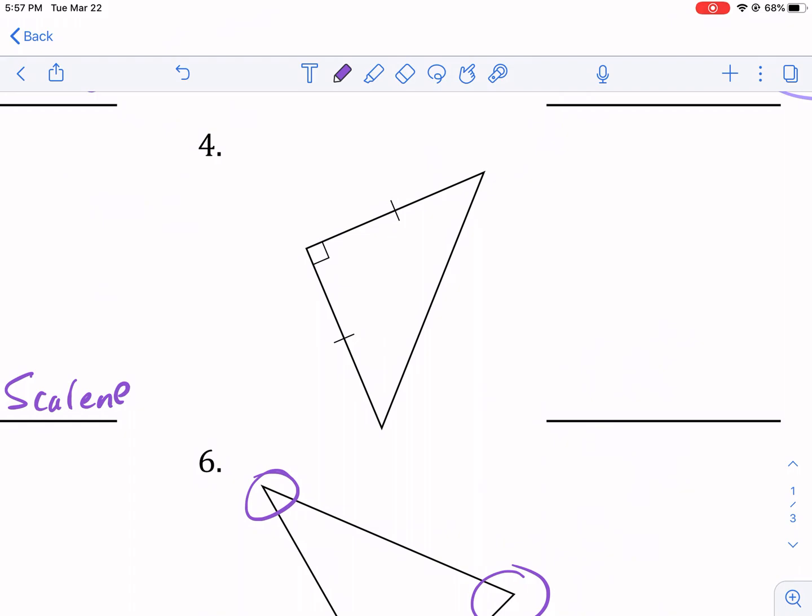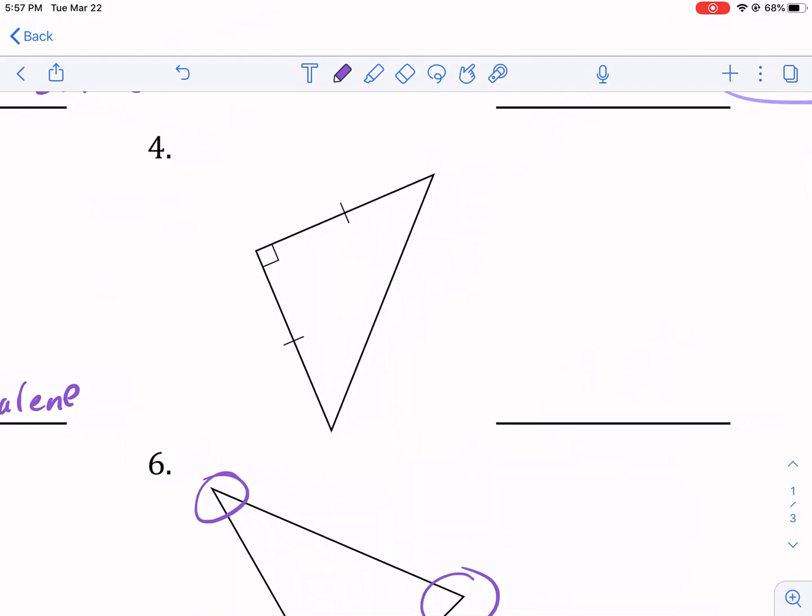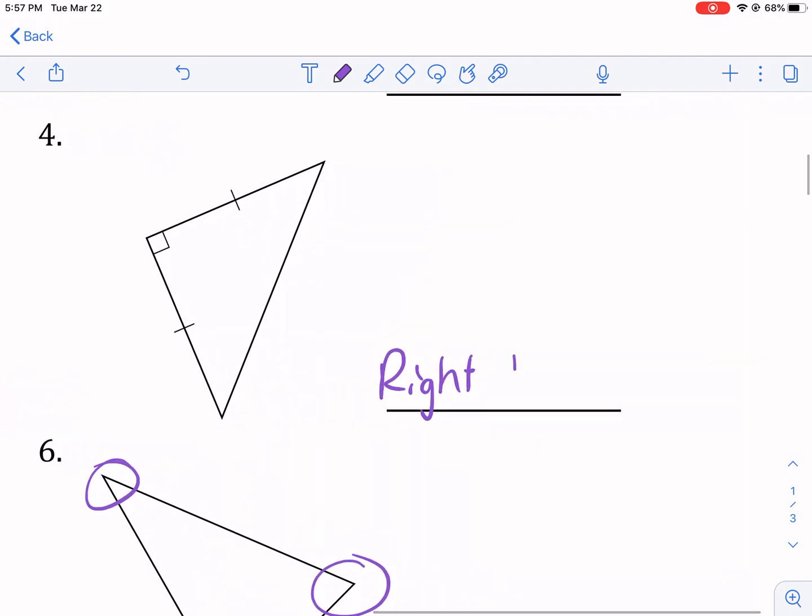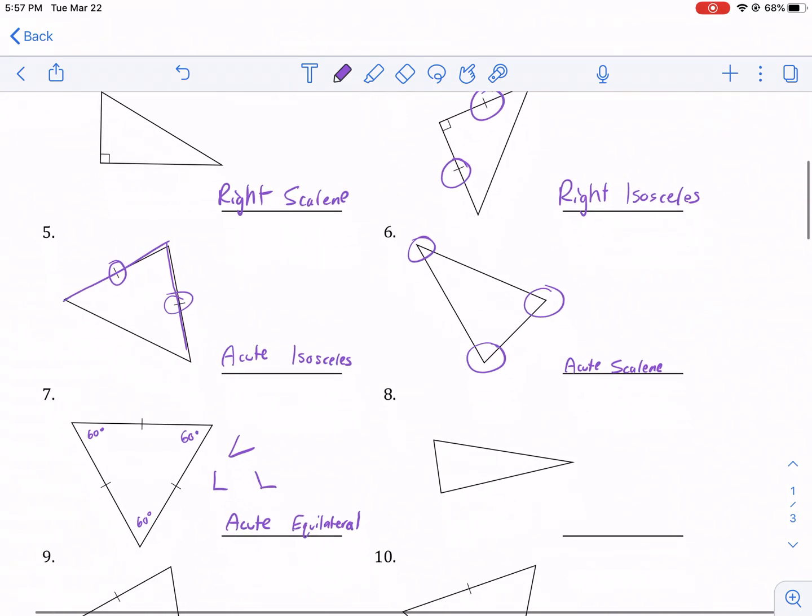And let's just do one more because the other ones you'll be able to figure out once you know the pattern. This is right because it has that right angle, the 90 degree measure. And then it's isosceles because it too gives us this information. So that's a right isosceles, which actually is a great triangle.